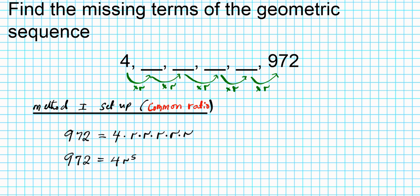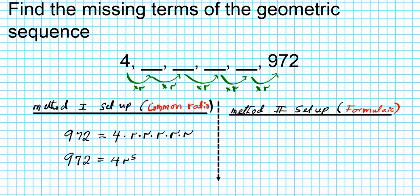Now this is one way to set up the problem. Let's take a look at another way — method number two, which I'm going to call the formulaic method. We're going to use the formula for the nth term of a geometric sequence. If you don't know the formula, you can always resort to the common ratio method — that always works.